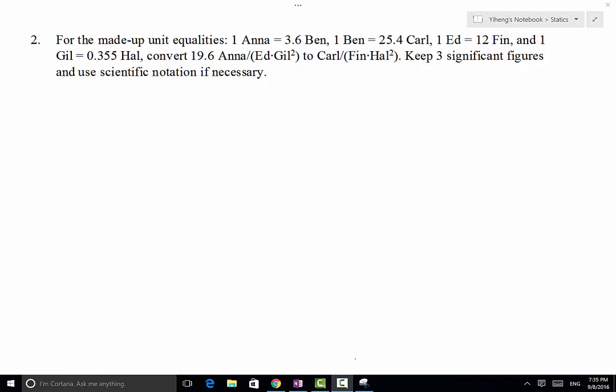This is a unit conversion problem with made-up unit equalities purely for practice purpose. We need to convert 19.6 Anna over Ed times gill squared into Carl over Finn Hall squared.